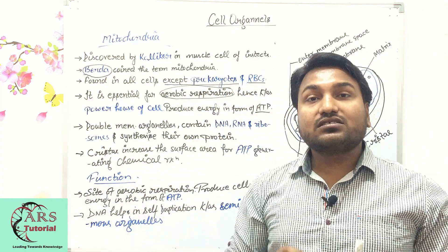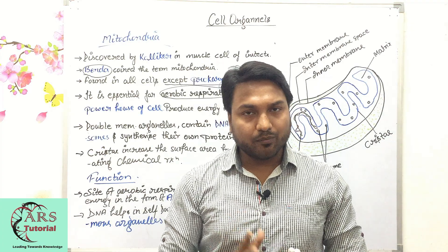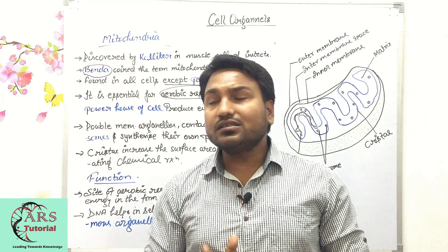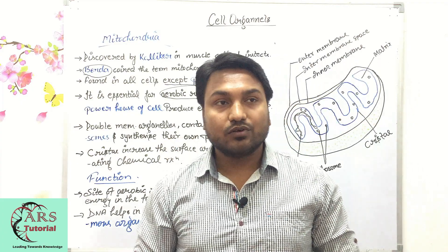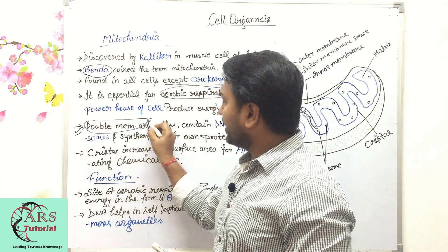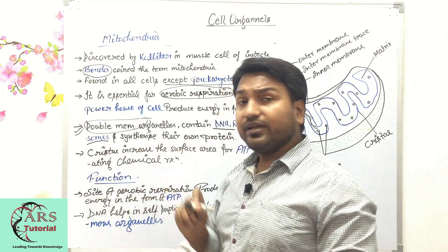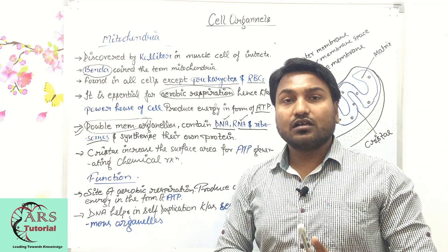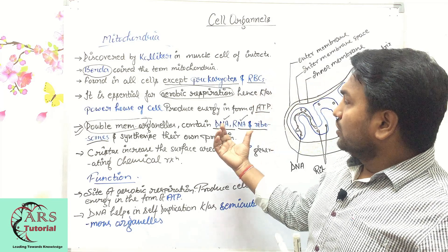Mitochondria is a double membrane cell organelle. It contains DNA, RNA, and ribosomes for the synthesis of its own proteins. This is a very important point. A question for you: what is the full form of DNA and what is the full form of RNA? Please write your answers in the comments.